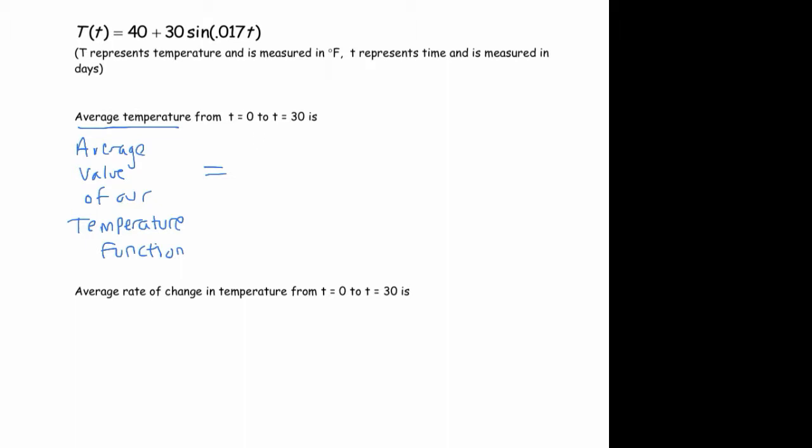So that's going to be the integral, 1 over 30 minus 0. I'm going to put the units in here to show you that this is going to give us what we want. So that's days down there in the bottom. We're evaluating the integral from 0 to 30, and that's 40 plus 30 sine of 0.017t dt.